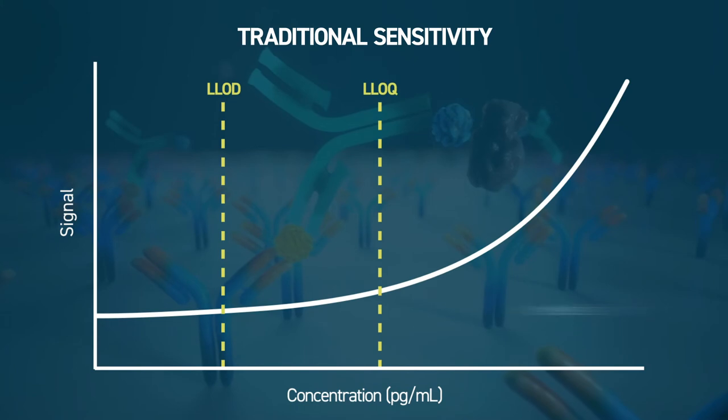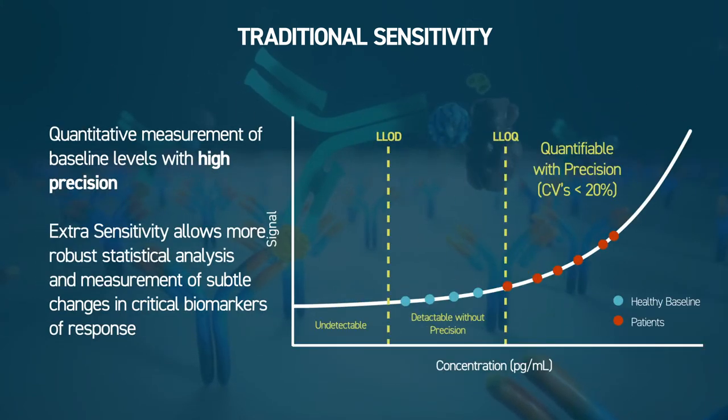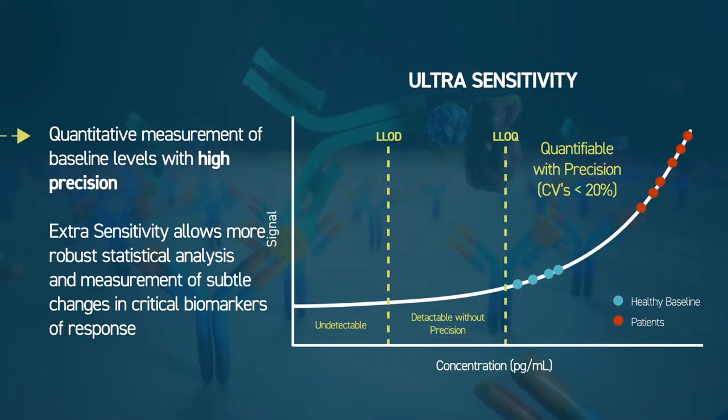For a robust and statistically significant stratification of patient groups based on biomarker concentrations, it is critical that healthy and pre-treatment baseline levels are accurately measured.